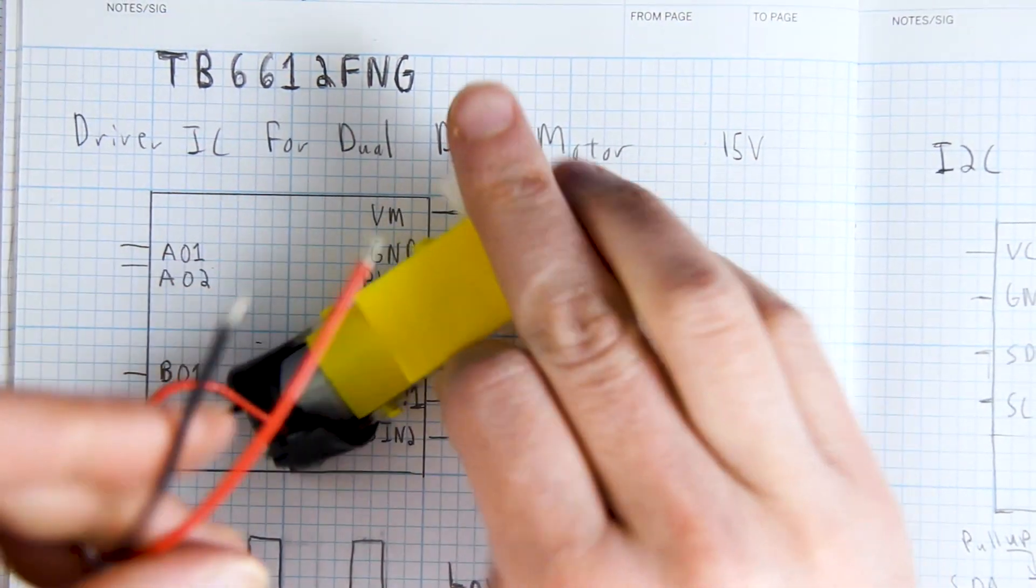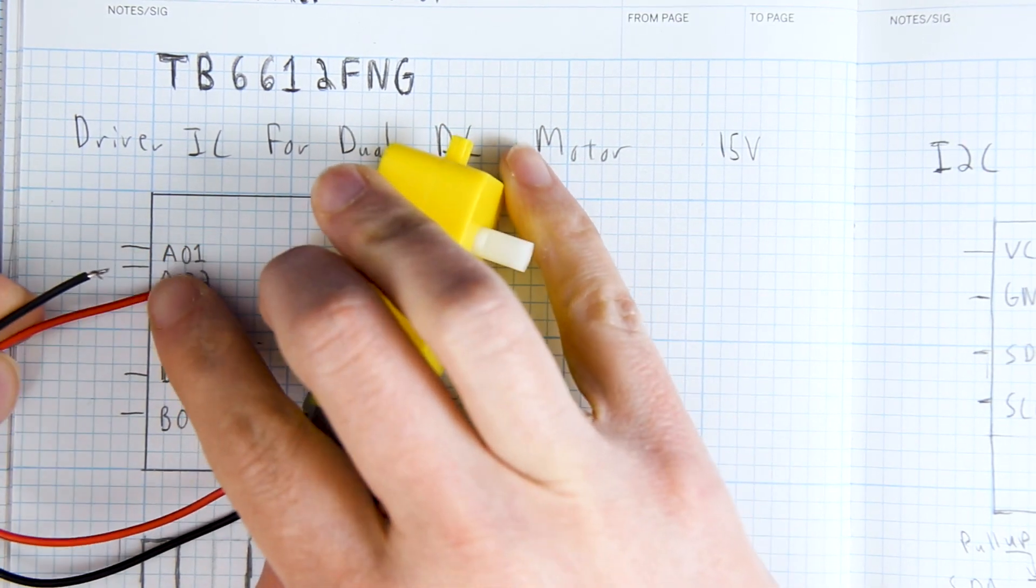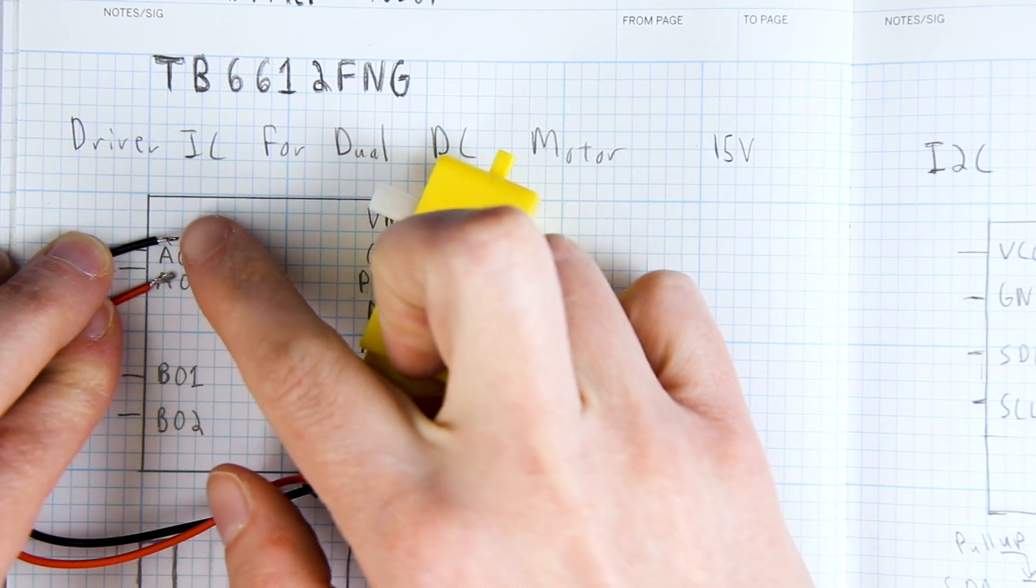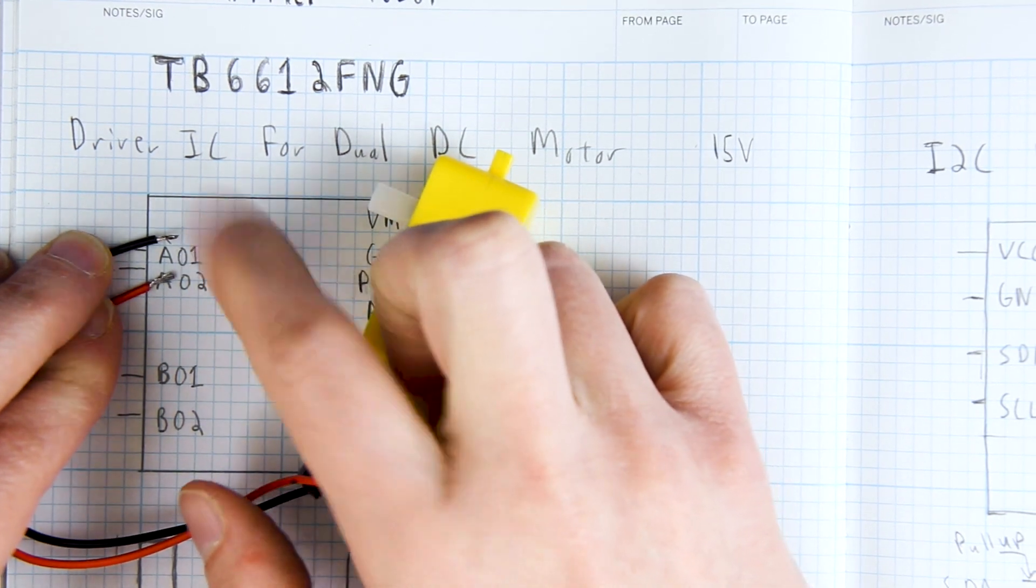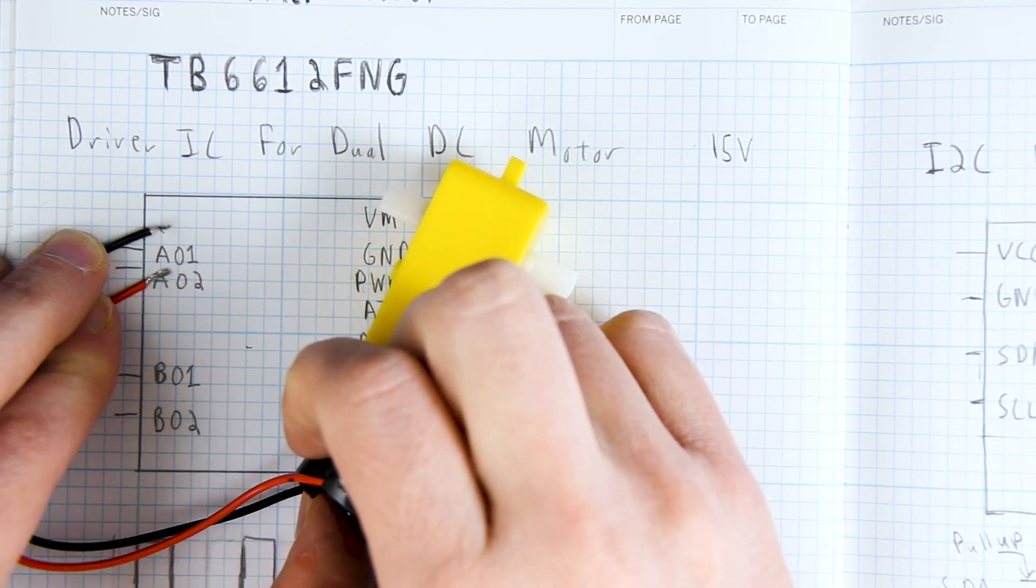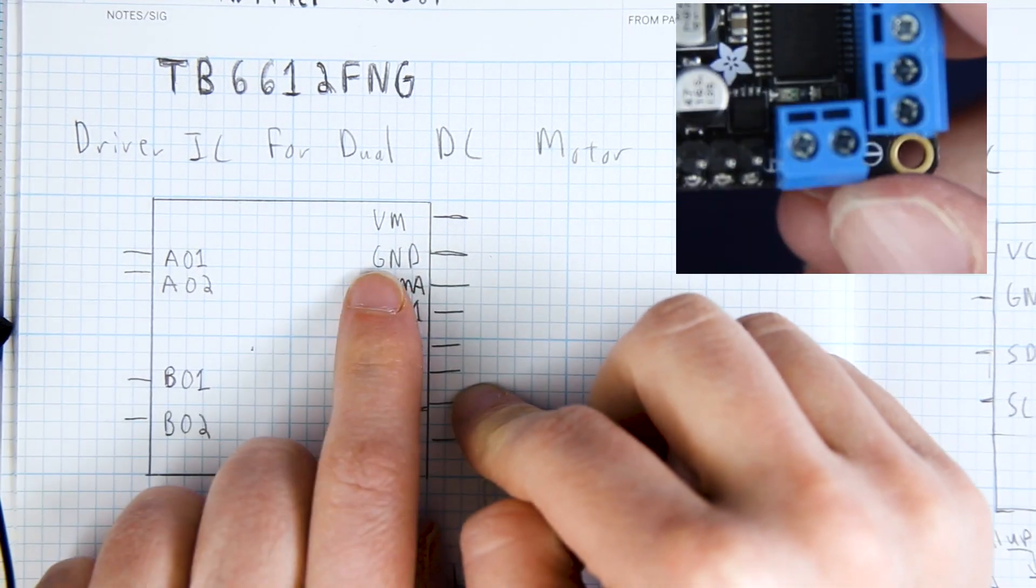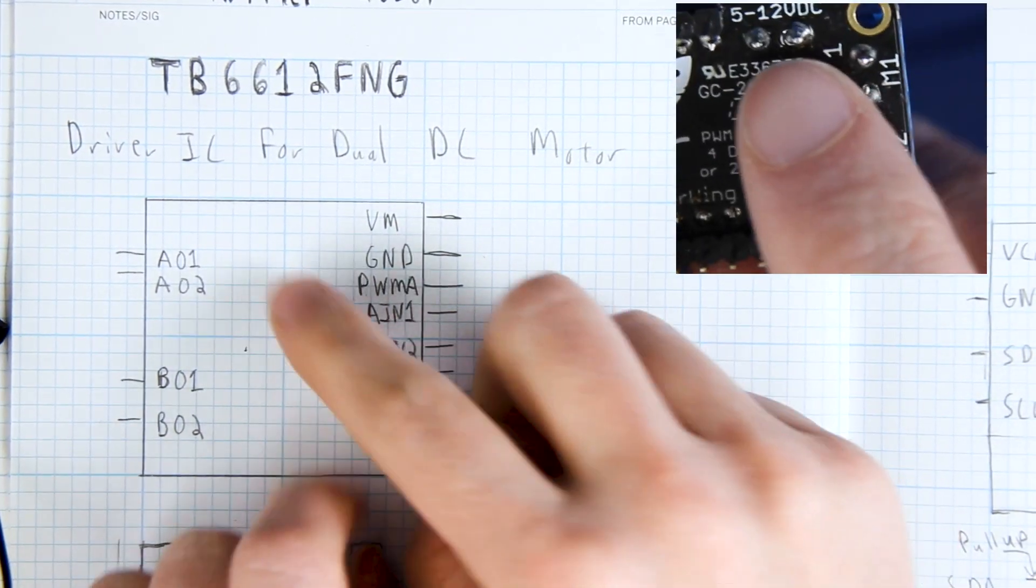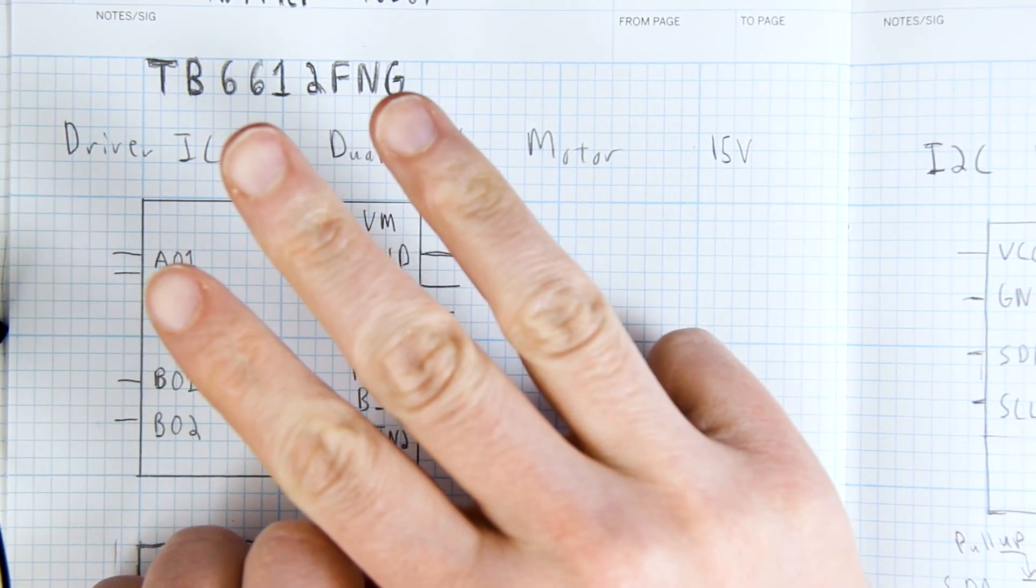So all we would do is hook up our motor or power and ground to either the A outputs or the B outputs and we can either change the voltage that's going to it or the direction of the current and the way we do that is with these over here.